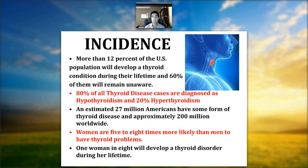Eighty percent of thyroid diseases are diagnosed as hypothyroidism — hypo meaning decreased production of T3 and T4. Twenty percent are diagnosed as hyperthyroidism — the thyroid producing too much T3 and T4. An estimated 27 million Americans have some form of thyroid disease, not including subclinical cases. Women are five to eight times more likely to have a thyroid condition than men, and one woman in eight will develop a thyroid disorder during her lifetime.